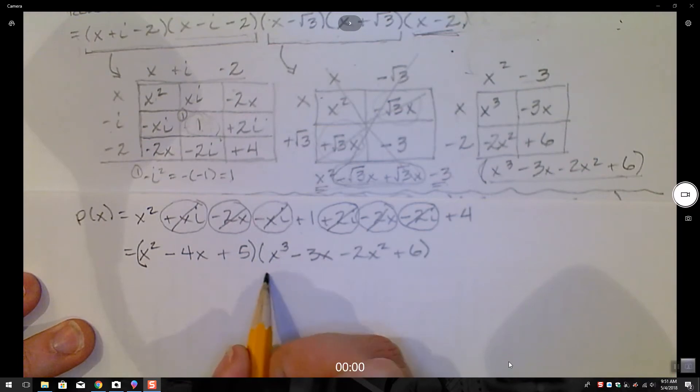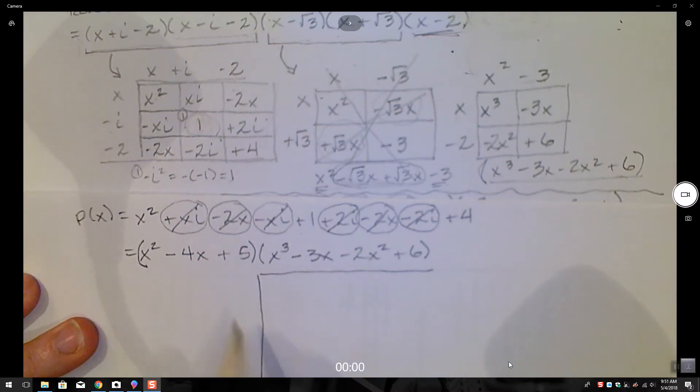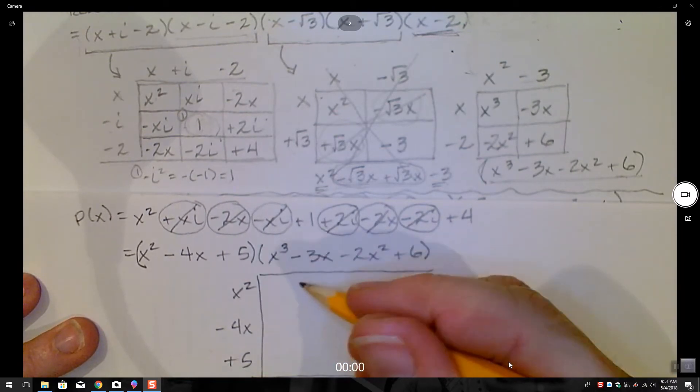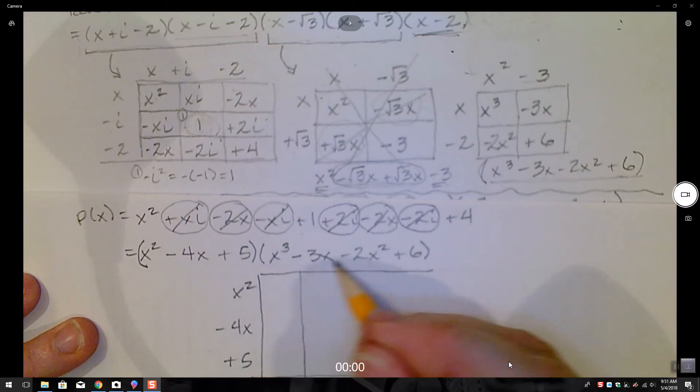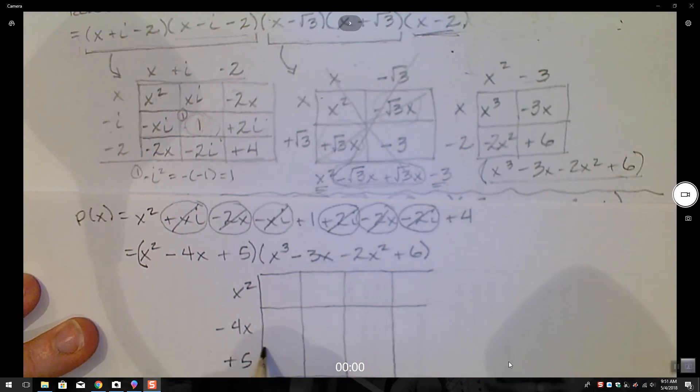I'm going to actually do a tabular combination again. So I'll put these three terms down here. I have an x squared minus 4x plus 5. I'm using this as my header. And I wind up with x to the fifth. Lovely.